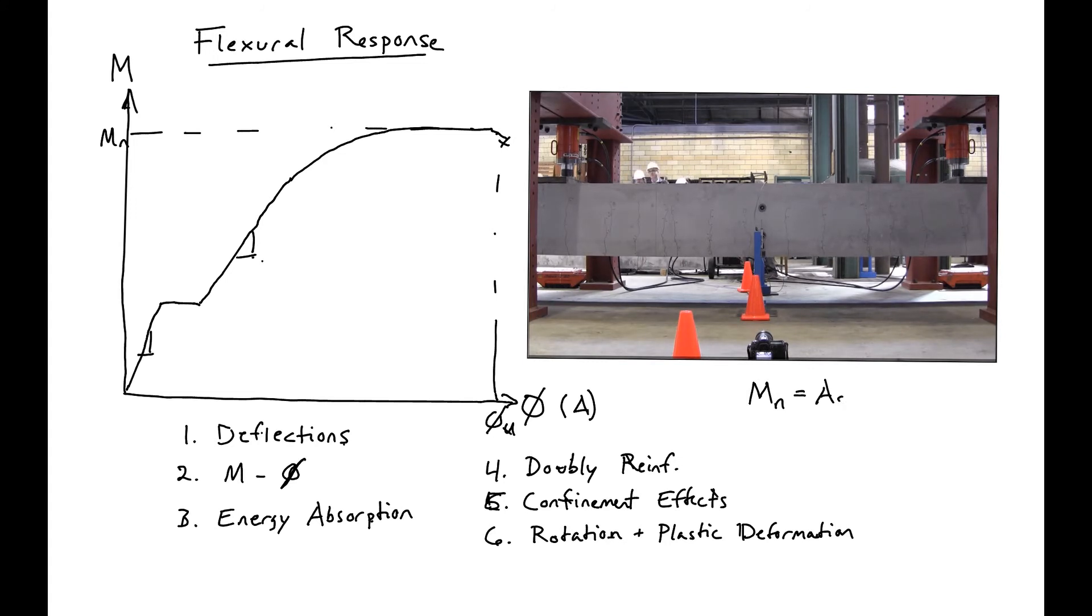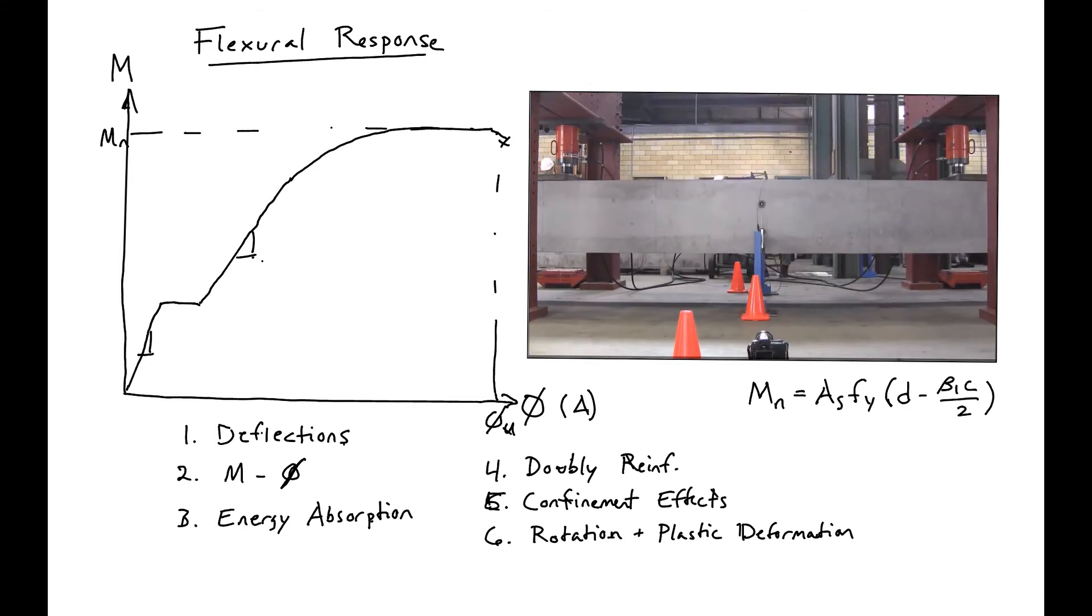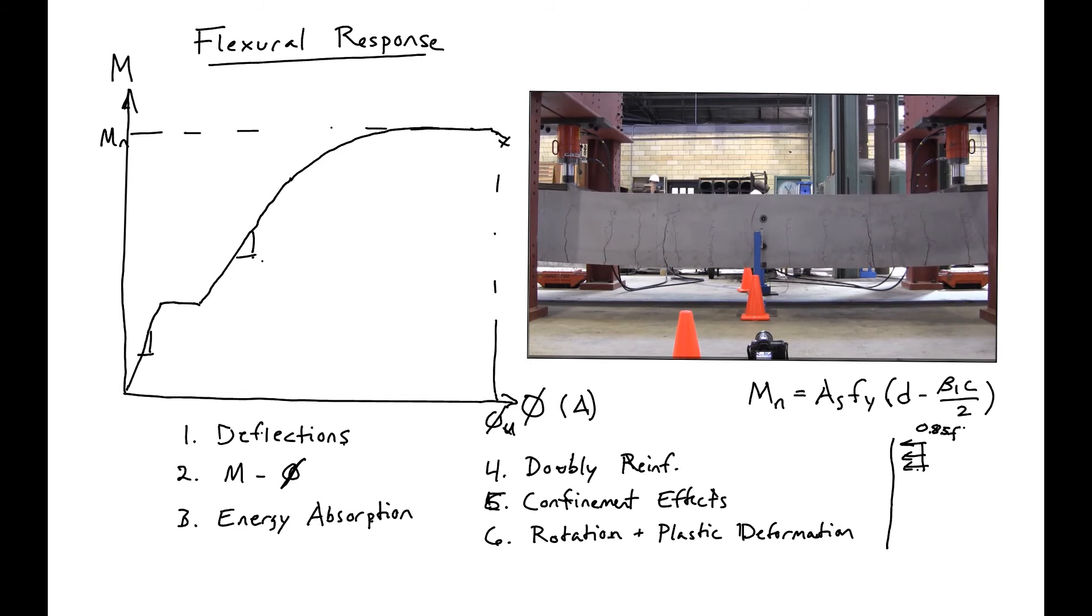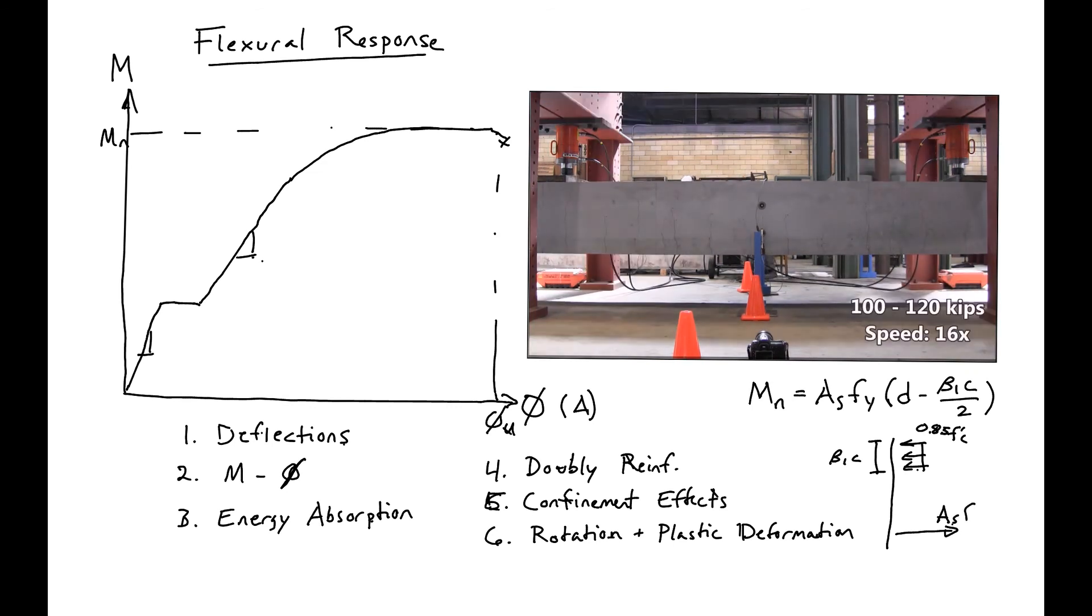This is essentially our rectangular stress block, which you should remember: As·Fy·(d - β1·c/2) is our moment. We can find this from ACI by looking at our stress diagram with 0.85·f'c, β1·c, and As·Fy.